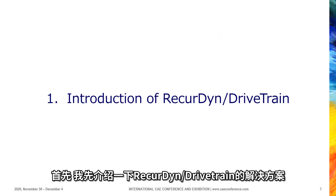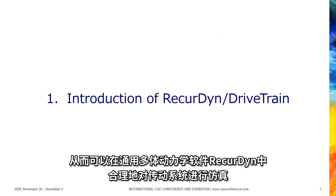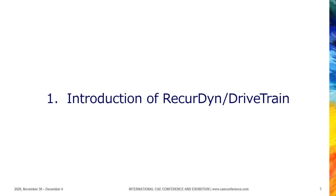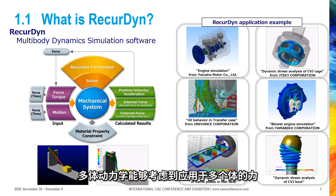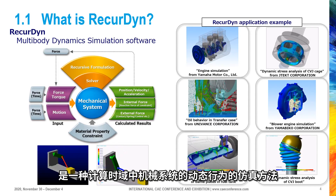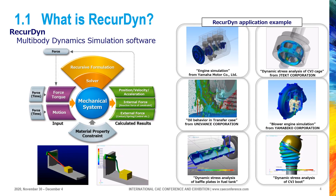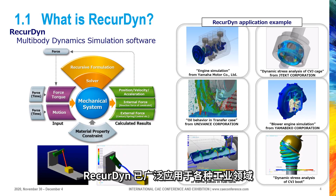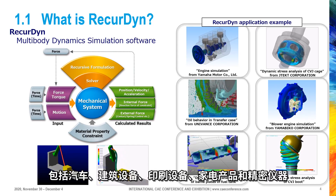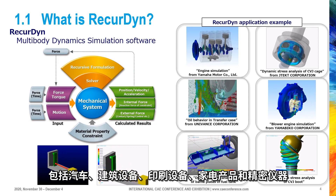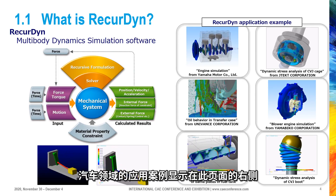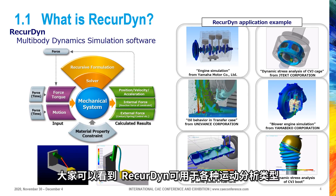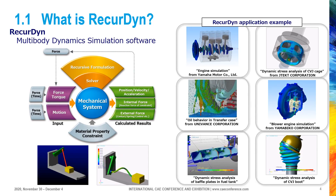I'd like to start talking about an introduction of Ricardine drivetrain solution, which makes it possible to simulate drivetrain systems reasonably in the general-purpose multibody dynamics software Ricardine. Multibody dynamics is a simulation method that calculates dynamic behavior of a mechanical system in time domain considering forces applied on multiple bodies. Ricardine has been used widely in various industrial fields, including automobiles, construction machines, printing machines, home electric appliance products, and precision instruments. Ricardine can be used for various types of motion analysis.